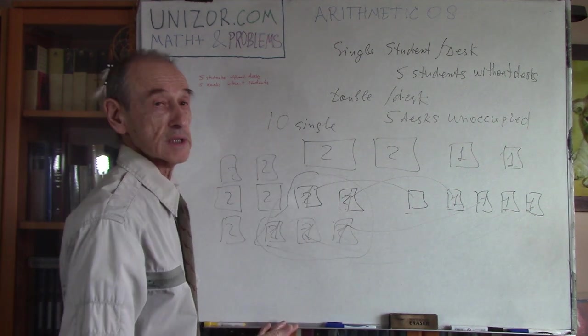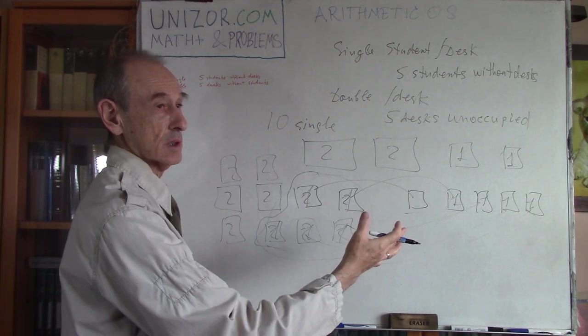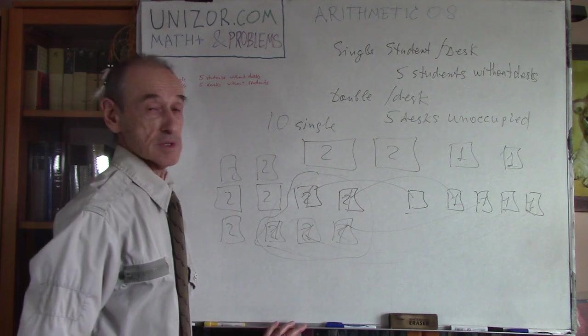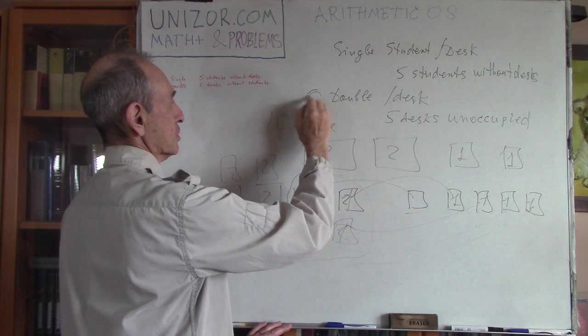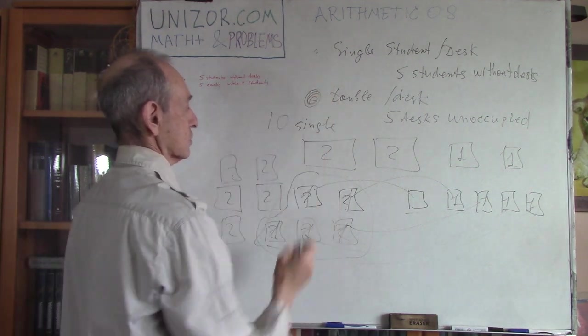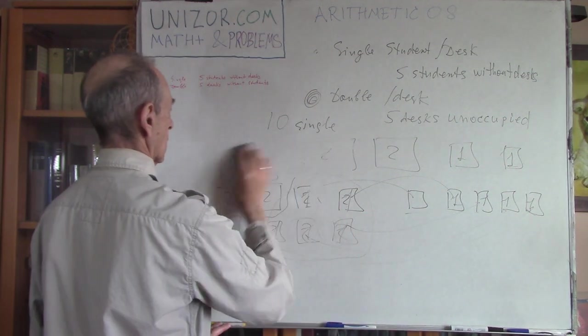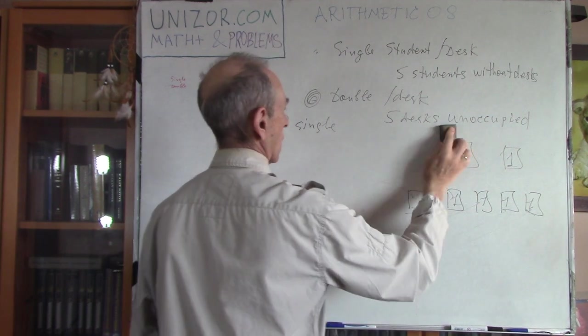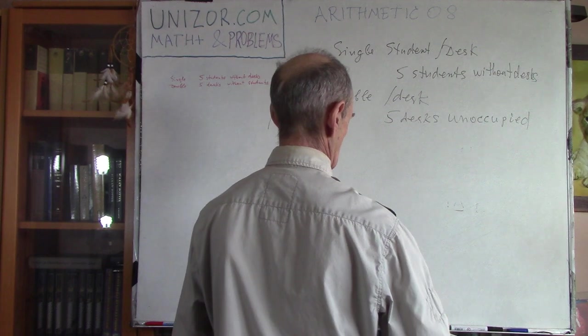To fill up completely all the desks, some of them with two, some of them with one, you will have ten desks with a single student on them. We used this particular condition. Now, let's use this condition.